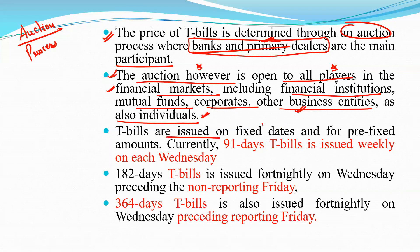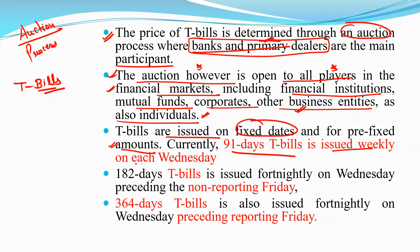Treasury bills are issued on fixed dates and for pre-fixed amounts. Currently, 91-day treasury bills are issued weekly on each Wednesday.